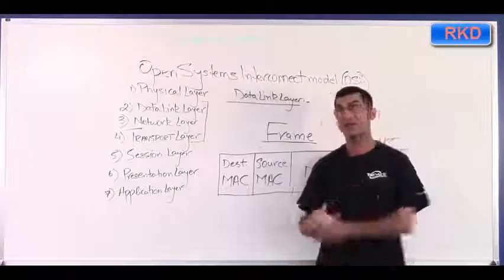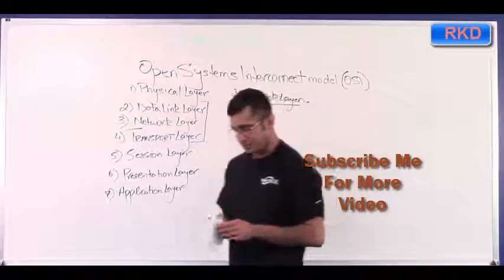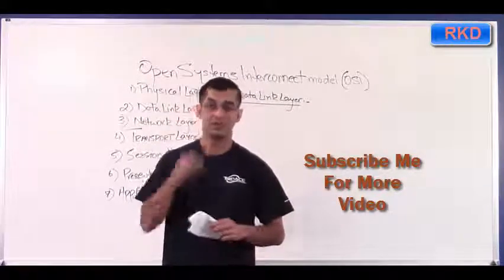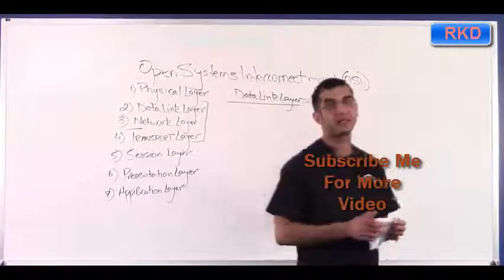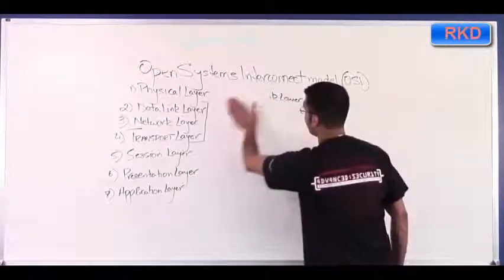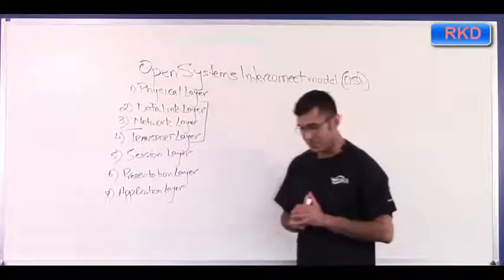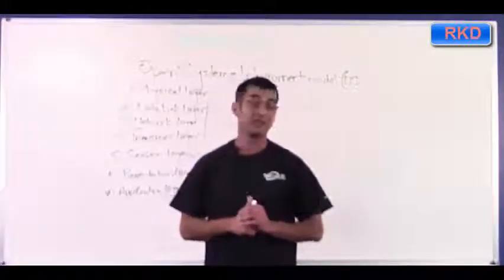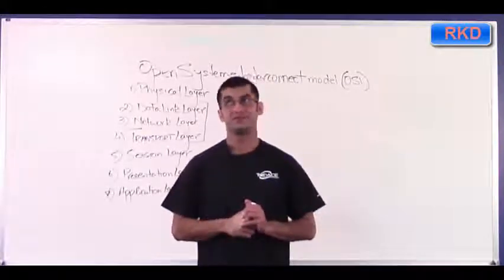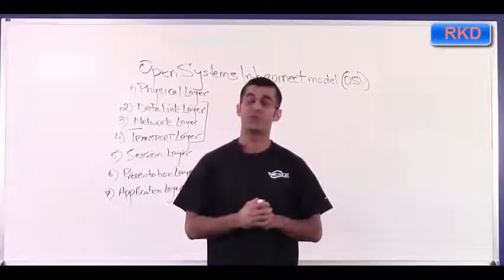Up until now I've mentioned what type of addressing is used at Layer 2 and what the protocol data unit is at the data link layer — the frame. I haven't yet mentioned what devices work at the data link layer. Most specifically, a switch operates at the data link layer. I'm going to explain how a switch functions and draw a rudimentary switch on the board.